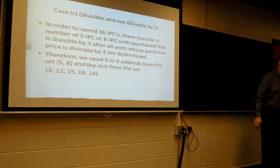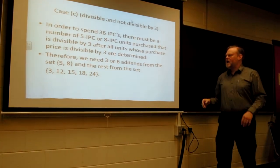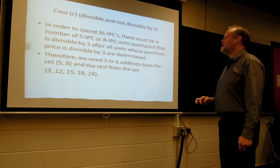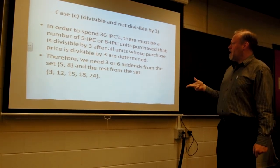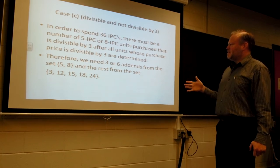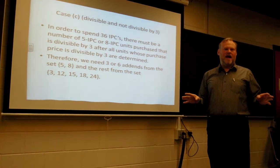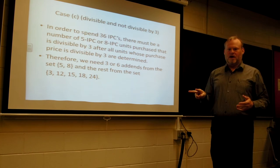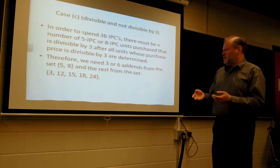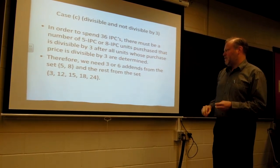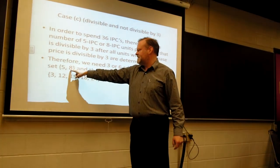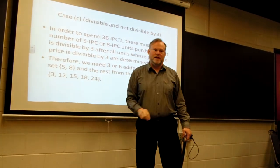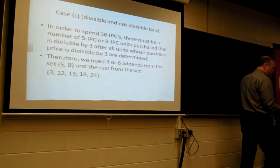Case C is the mix and match. In order to spend the 36 IPCs, the number of units of price five or eight must be divisible by three, and then after that, that number would be divisible by three, and you can get units of the price which is divisible by three. So we need three or six add-ins from this set, and we need the rest to come from here. So let me go through the possible combinations.